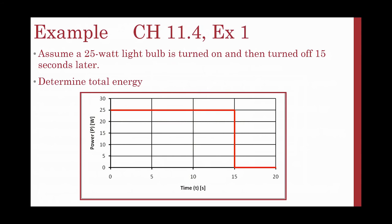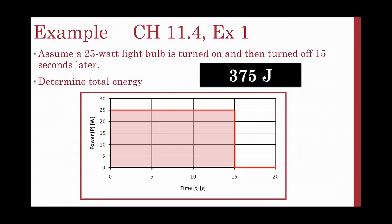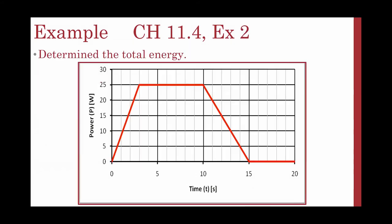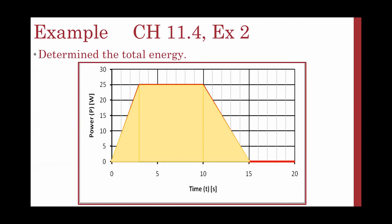We assume we have a 25-watt light bulb that is turned on and then turned off 15 seconds later. We want to determine the total energy. That total energy is going to be the area under my curve, which turns out to be 375 joules. To determine the total energy in this graph, I can break my area up into smaller areas that I can easily calculate.